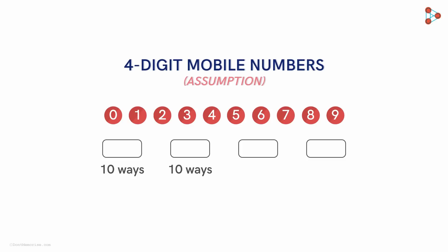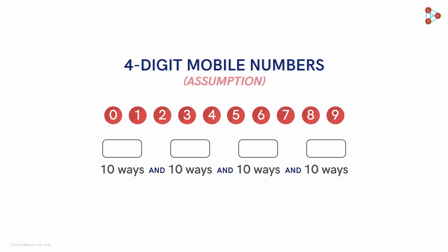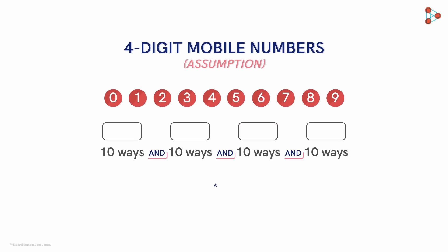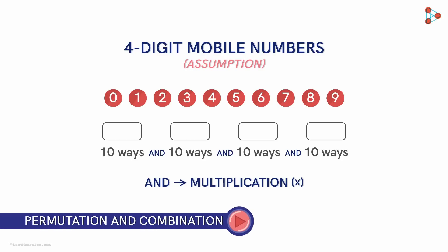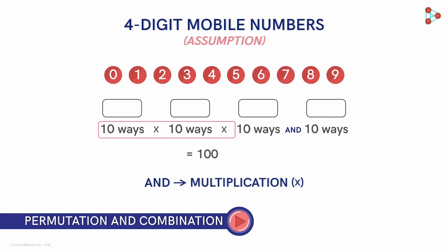If you've understood the logic, the third slot can also be filled in 10 different ways, and the same logic holds for the fourth slot as well. So we have filled each slot in 10 different ways — first slot in 10 ways, the second in 10, the third in 10, and the fourth in 10. Notice I have used AND here — that's where the rule of counting comes into picture. AND means multiplication. To know more about counting and similar concepts, head to our course on permutations and combinations. So, 10 multiplied by 10 is 100; 100 multiplied by 10 is 1,000; and 1,000 multiplied by 10 gives us 10,000 — that's 10,000 different mobile numbers.